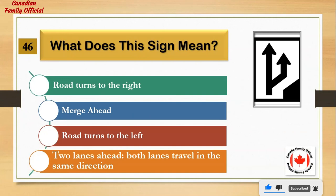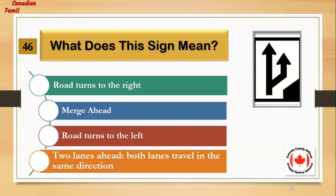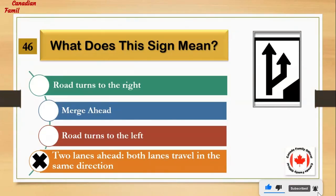What does this sign mean? Number 1: road turns to the right. Number 2: merge ahead. Number 3: road turns to the left. Number 4: two lanes ahead — both lanes travel in the same direction. And the answer is: two lanes ahead — both lanes travel in the same direction.